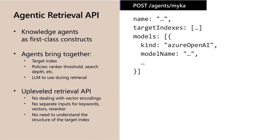Introducing Knowledge Agents — autonomous entities encapsulating data sources, reasoning models, and policy enforcement. Instead of manipulating vectors or indices manually, you interact with these agents using conversational context. They plan query execution, perform multiple retrievals, merge results, and provide transparent logs and citations. A session demo showcased a Python notebook contrasting classic semantic search with knowledge agents, illustrating how agentic retrieval seamlessly handles multi-part, context-rich questions with detailed traceability.